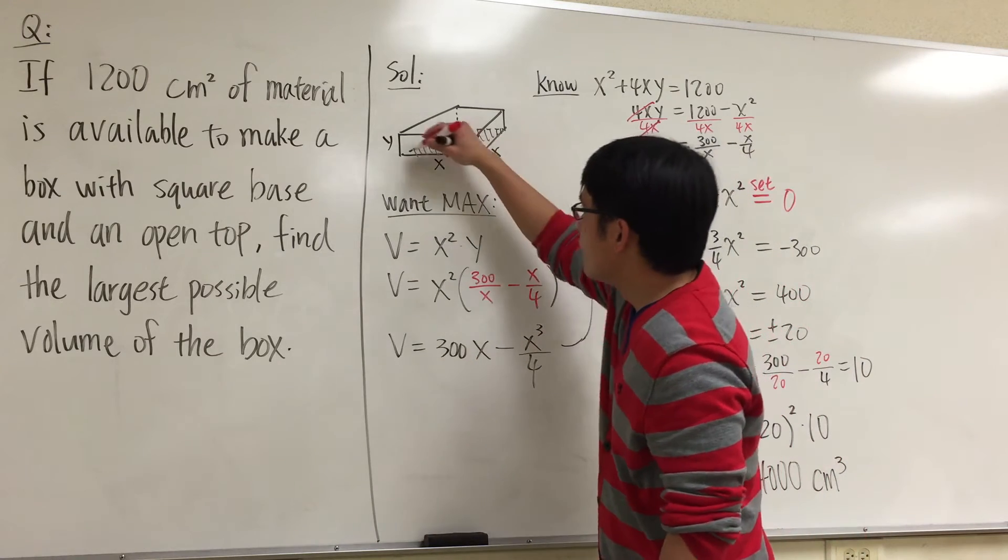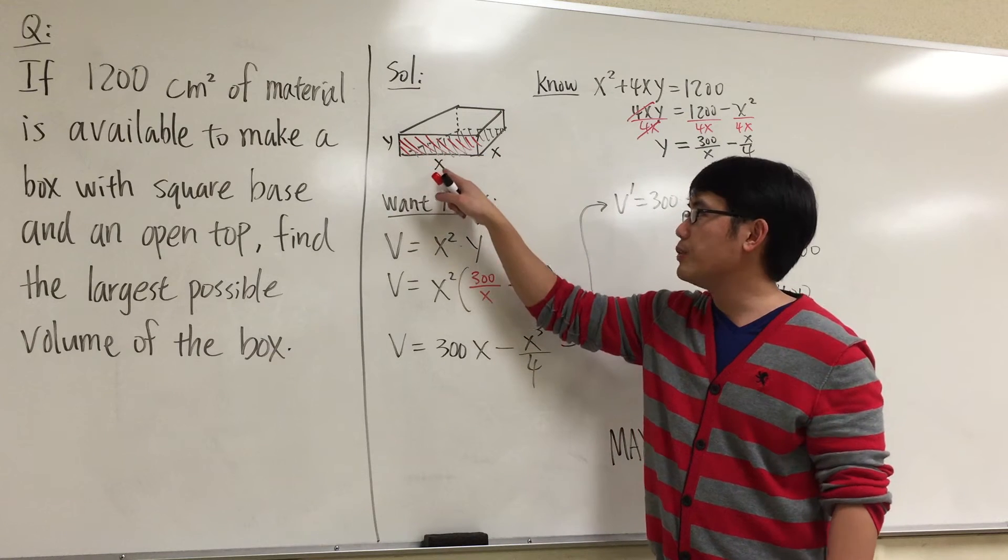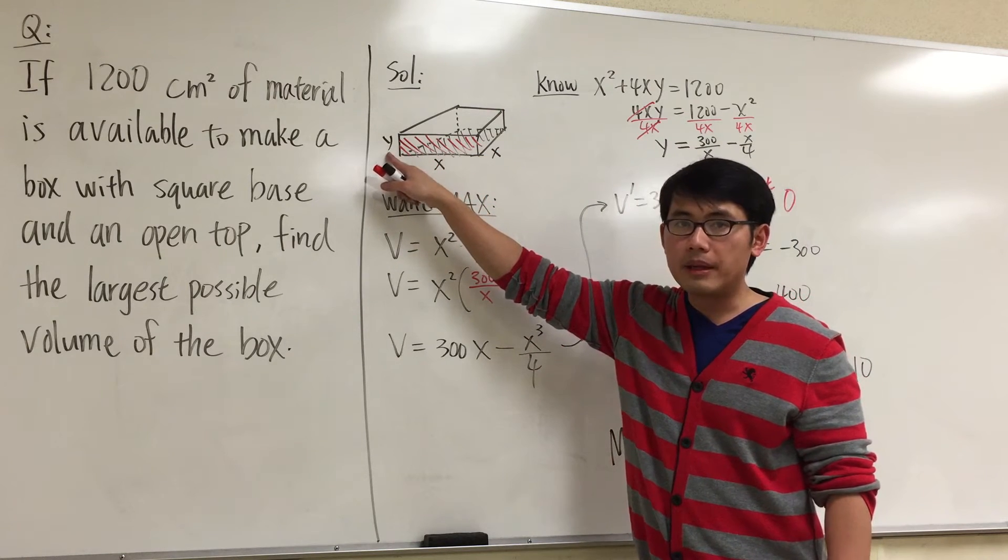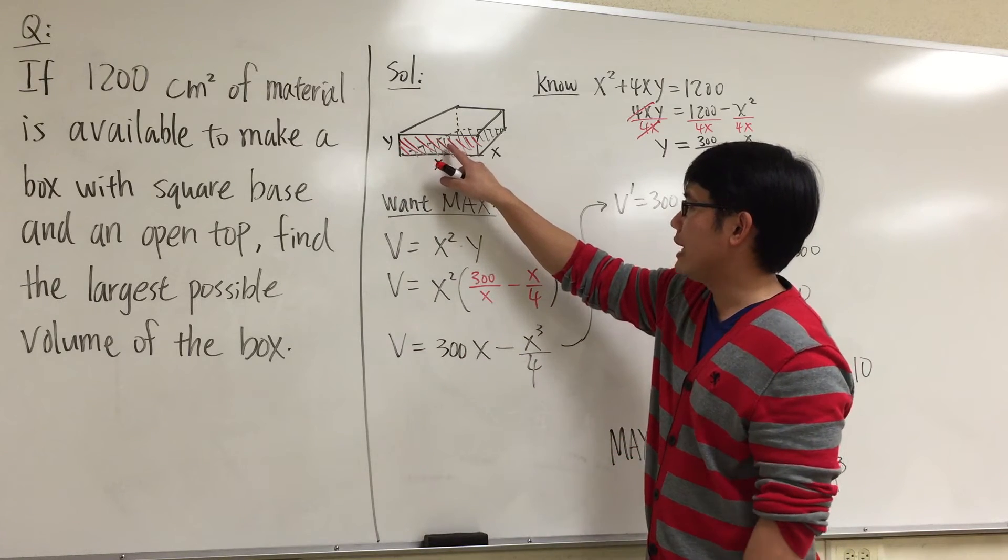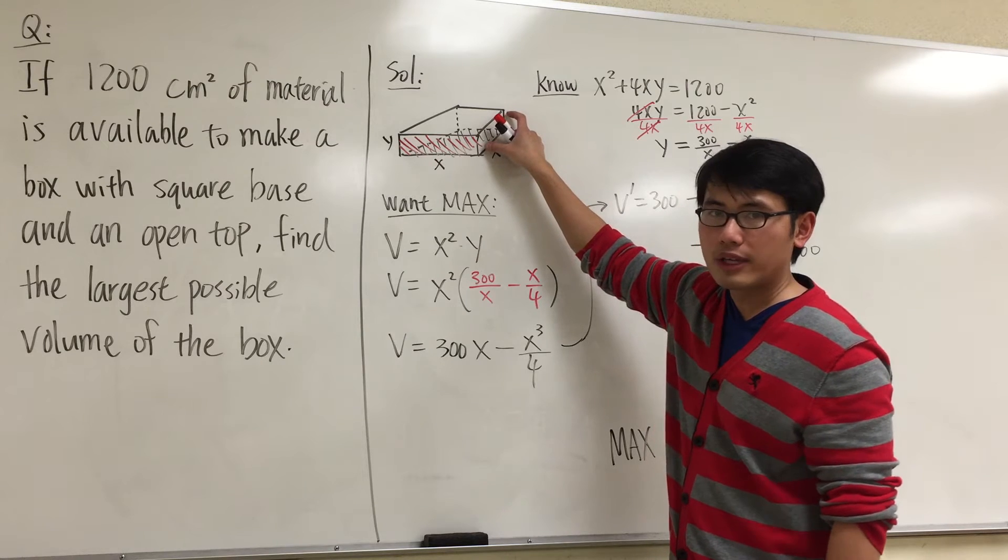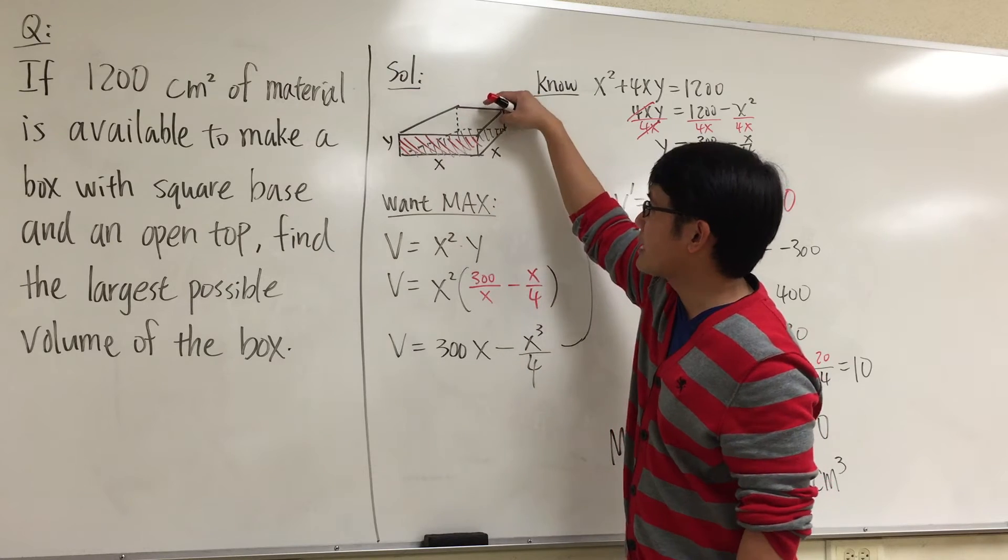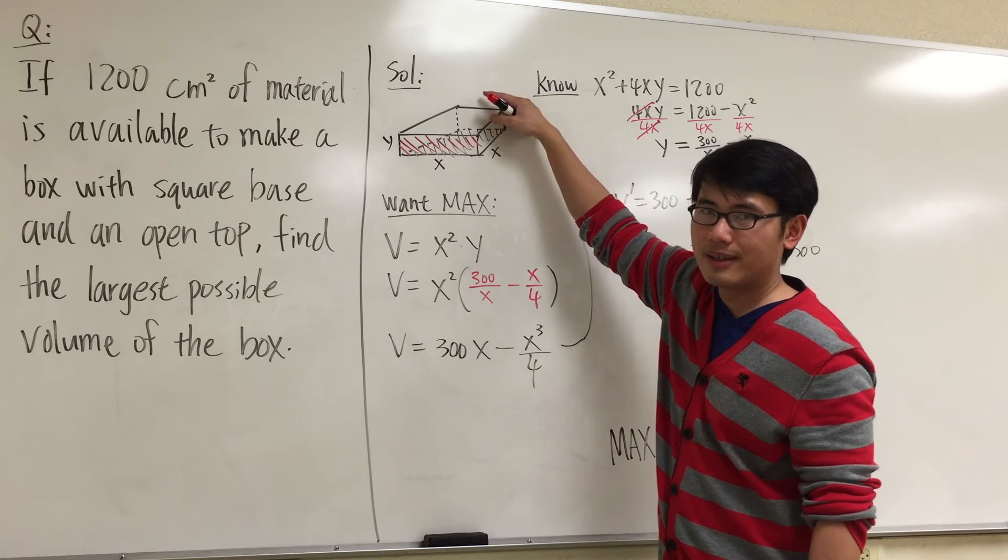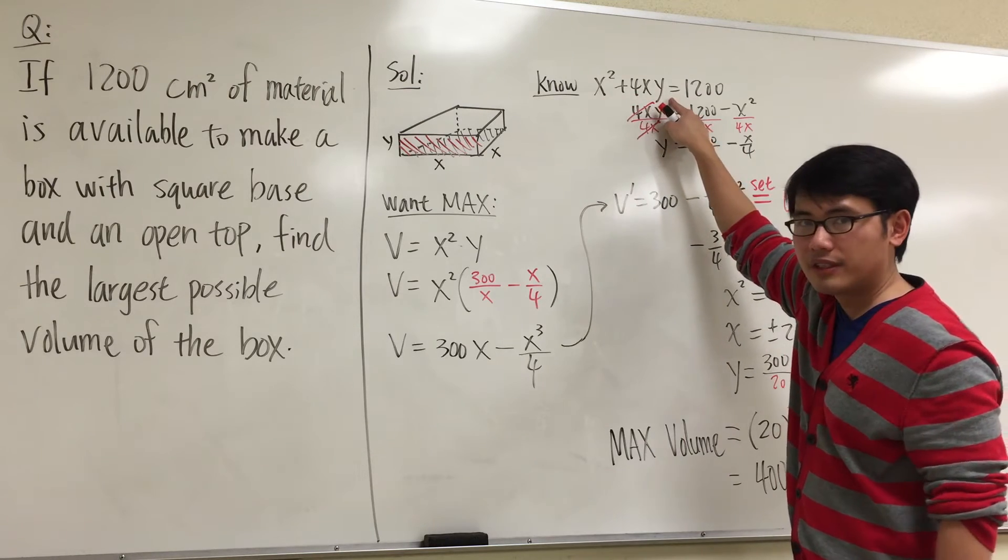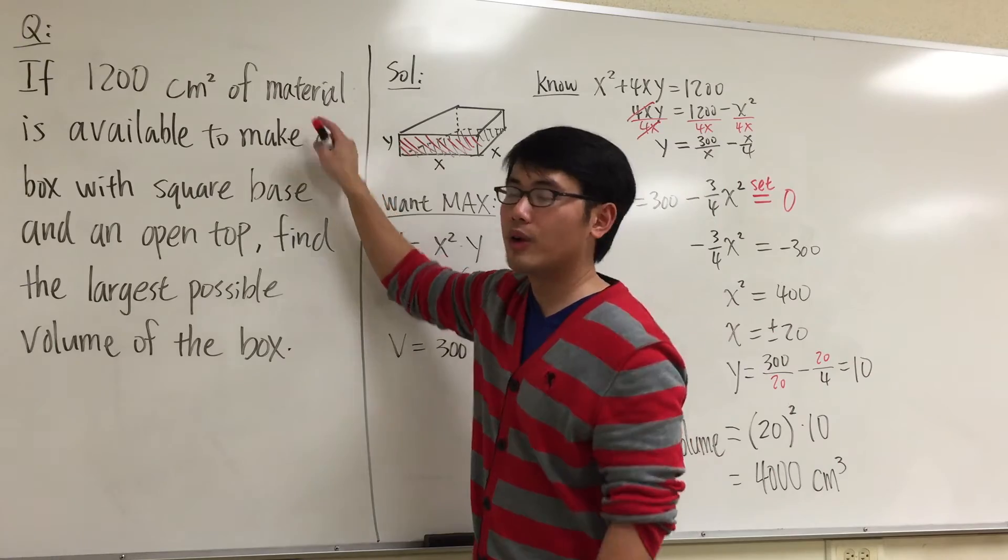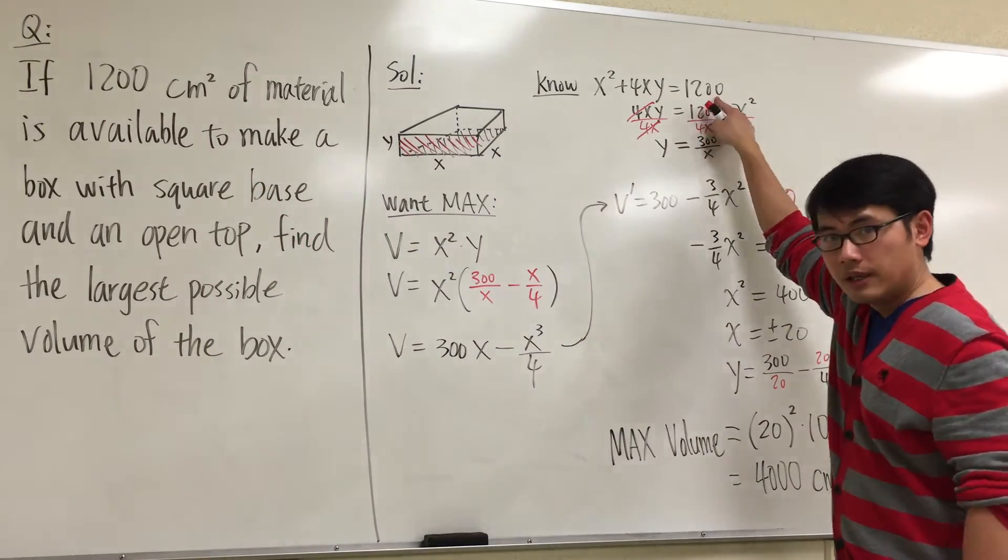And then on the side, the area of the front is going to be x times y. But then we have four of them. The front is x times y, and then on the side this is also x times y, on the other side it's also x times y, in the back it's also x times y. So we have a total of 4xy. This right here represents the surface area. And that will be the material, which is 1200 centimeters squared. So we set that equal to 1200.